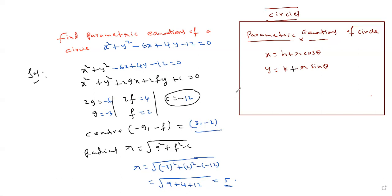Center is (3, -2). Let the center be (h, k). Write the formula and substitute: x = h + r cos θ = 3 + 5 cos θ. Very simple.